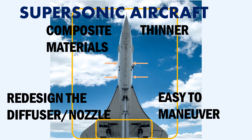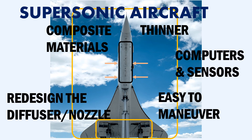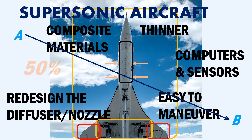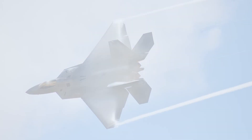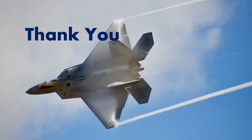The aircraft must also be easy to maneuver at low and high speeds. This can be achieved by fly-by-wire technology with onboard computers and sensors. The aircraft should also be capable of flying efficiently at subsonic speeds when operating near an airport at lower altitudes, to prevent sonic booms. Commercial supersonic aircraft are required because they will reduce travel time from A to B by 50%. That's all for this video on shock waves and supersonic aircraft. Thank you for watching.